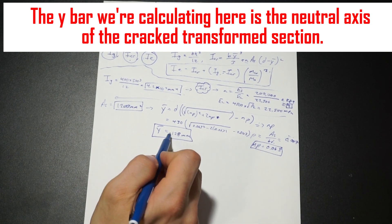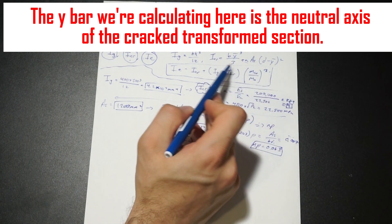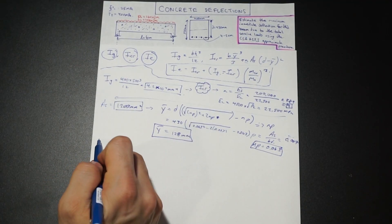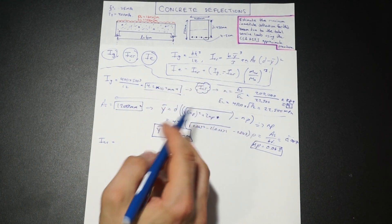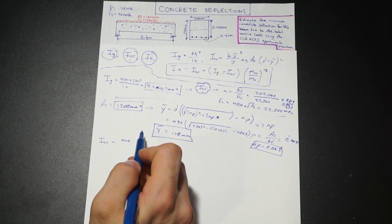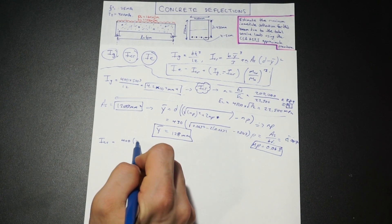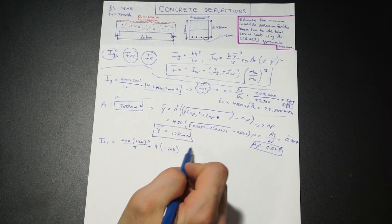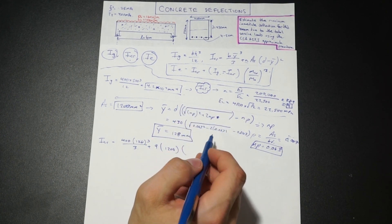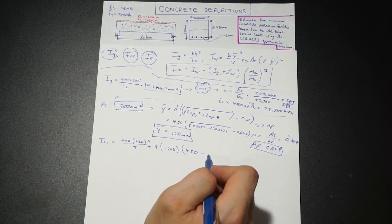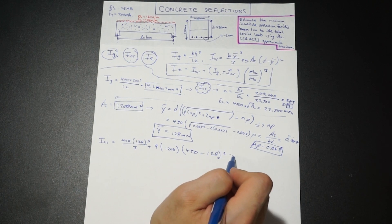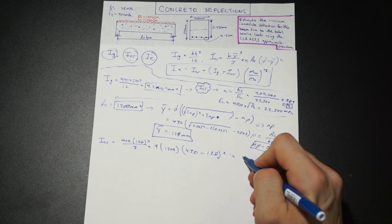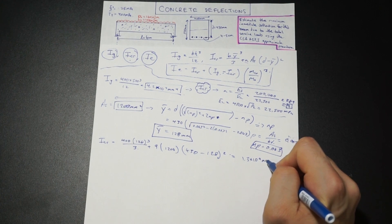We found Y bar. We have everything we need to compute the cracked moment of inertia. Plugging in: B times Y bar cubed divided by 3, plus N times AS times (d minus Y bar) squared. That's 400 times 128 cubed over 3, plus 9 times 1,200 times (430 minus 128) squared. We arrive at a cracked moment of inertia ICR of 1.3 times 10 to the 9 mm to the fourth.